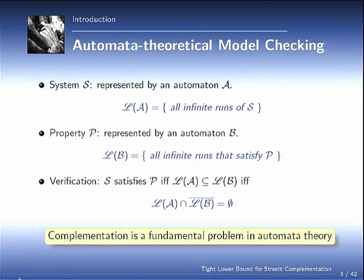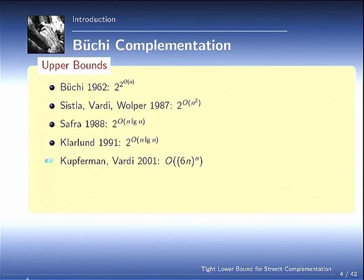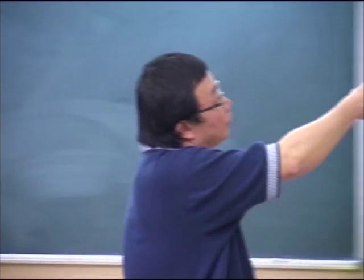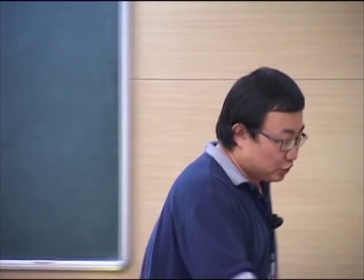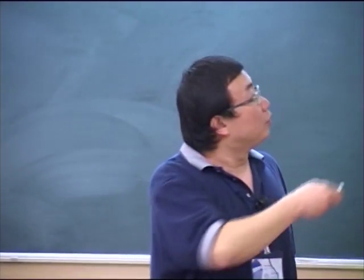For this reason, the complementation is a fundamental problem in automata theory. Actually, this is just one example. When we talk about any computation models, it's natural to ask whether the computation is closed under complementation and how efficient it is. During the past, almost 50 years, there are steady improvements on Büchi complementation algorithms. Until fairly recently, 2009, Schewe got the result n squared times ln, where ln is roughly this number. And this matches well with Yan's lower bound. Basically, there's a polynomial gap for this Büchi complementation.